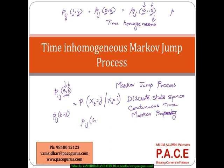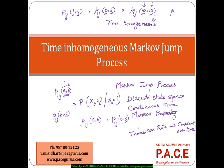Whenever I talk about P_IJ(s, t), if I find this kind of relationship holding true — that the transition probability depends only on t minus s — then I look at it as the Markov jump process in a time homogenous manner. Otherwise, I am looking at it as a time inhomogeneous Markov process. Whichever process shows that the transition rates and the transition rate matrix are constant over time, not changing with time, we call it a time homogenous Markov jump process.